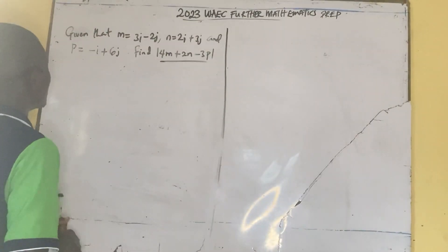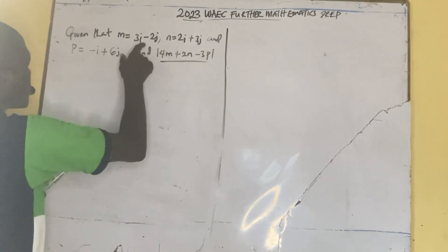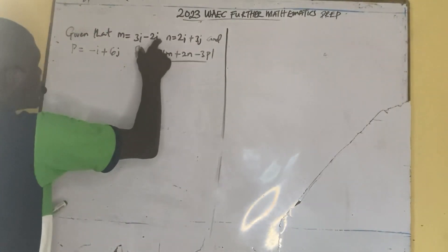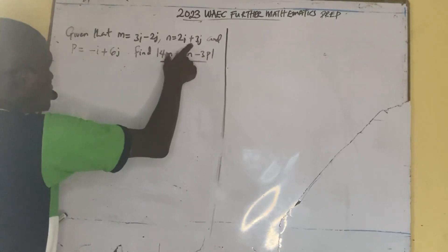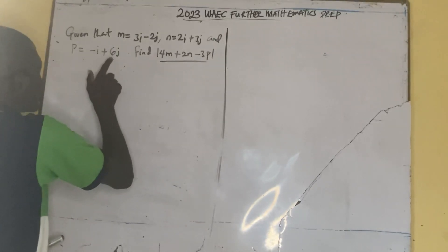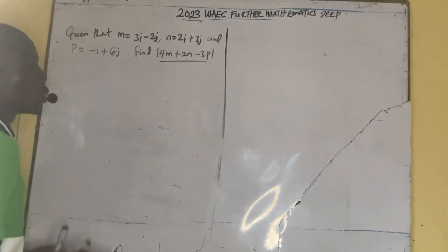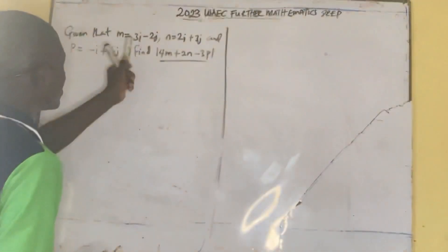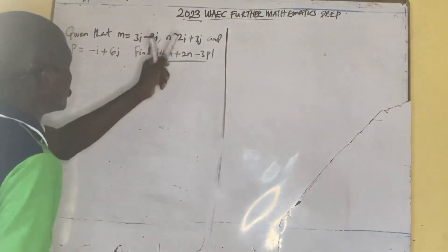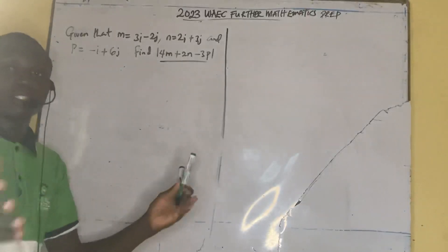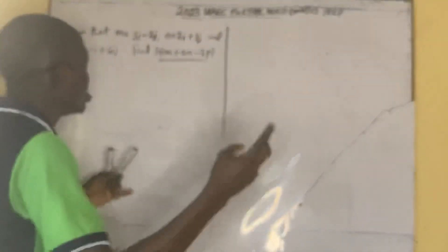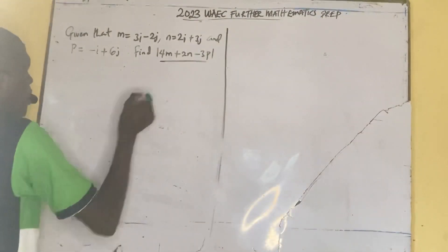Here is another question which is given that m is equal to 3i minus 2j, n equal to 2i plus 3j, and p is minus i plus 6j. So these are 2 by 2 matrices, you can see they give us i and j. There are 3 by 3 matrices as well, there will be 3i, j and k. But let's conclude this, we are going to calculate this.